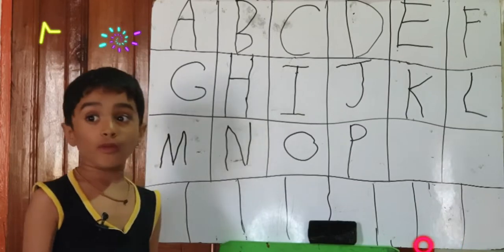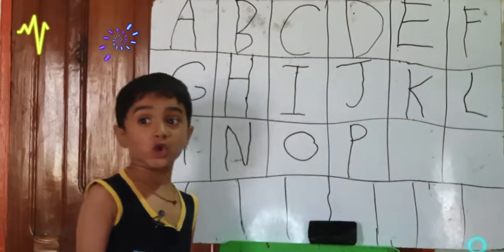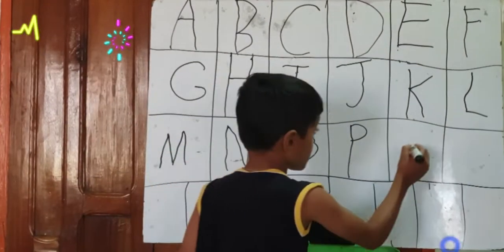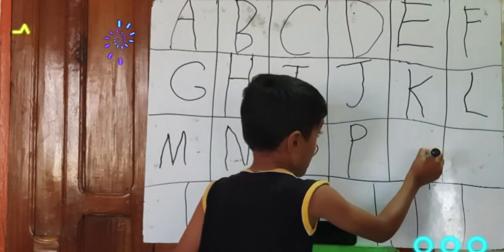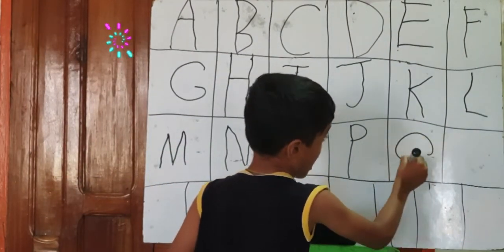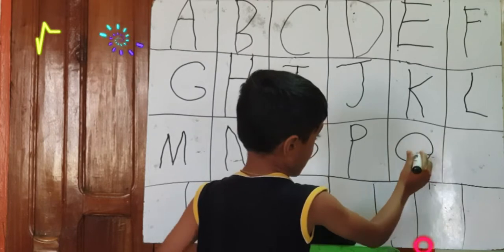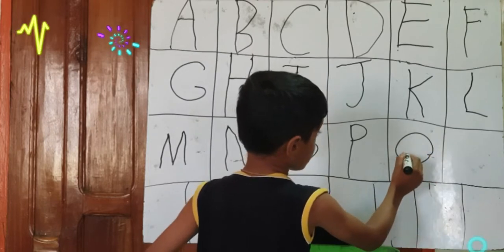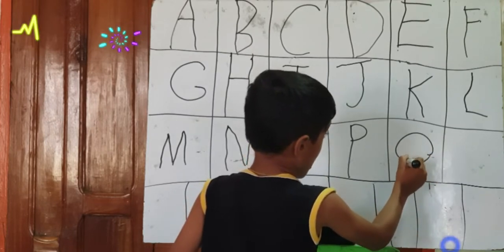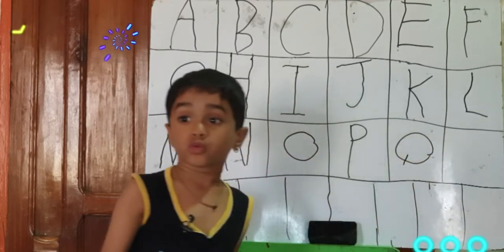Now we're learning Q. A circle and a cross down.